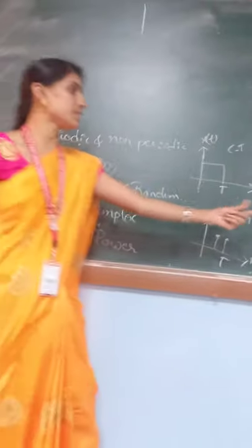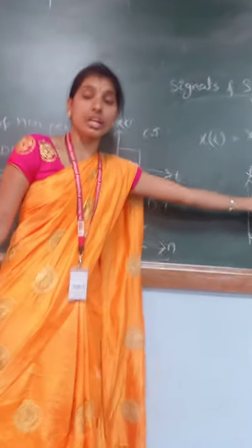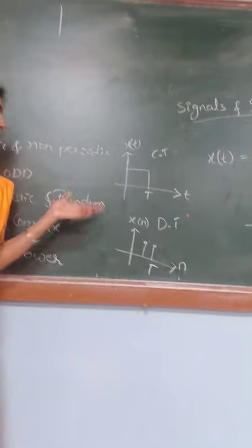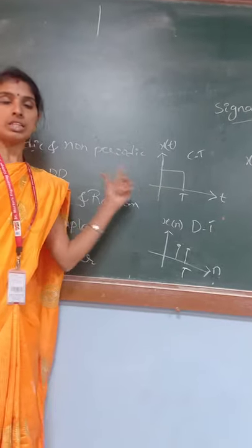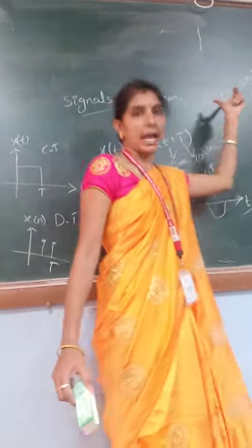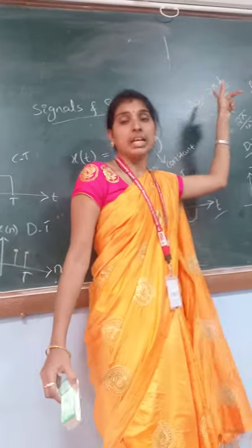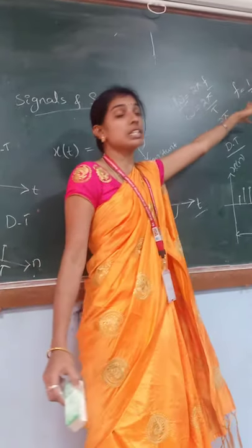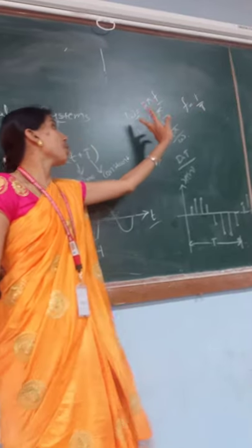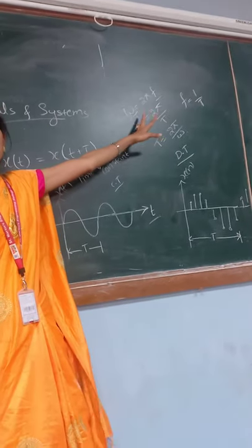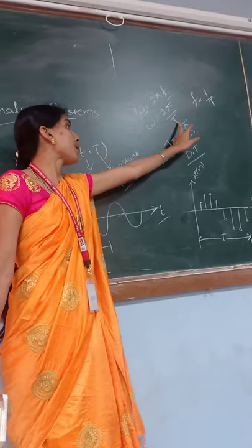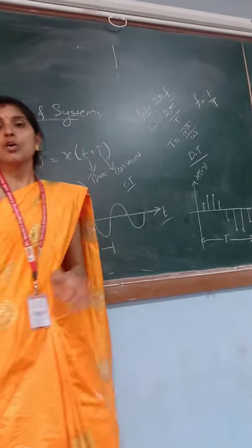Periodic means the signal will be repeated after every time interval of T. Non-periodic means the signal will not be repeated. In the periodic system, you can find the angular frequency: frequency F equals 1 by T; omega (angular frequency) W equals 2π; substituting F gives omega equals 2π by T, and T equals 2π by omega.